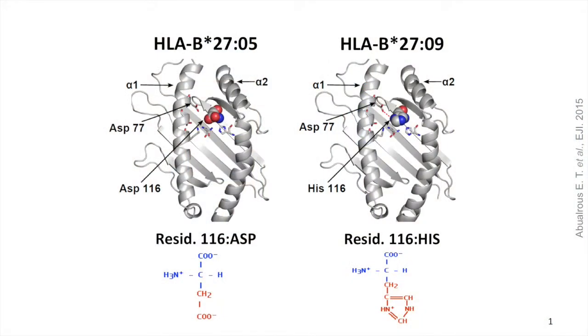Taking HLAB2705 and B2709 as an example, we suggest that by following the sequence and structure of the binding groove of class I, we can actually encode for the tapasin dependency of class I. This is an upper view of the binding groove of both proteins. HLAB2705 has a negatively charged aspartic acid at position 116, while HLAB2709 has a positively charged histidine. We don't yet understand how such a difference in one amino acid could explain the different behavior of these proteins inside the cell.